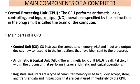The main components of a computer: the Central Processing Unit (CPU) performs arithmetic, logical, controlling, and input/output operations — it is the brain of the computer. The Control Unit instructs the computer's memory, ALU, and I/O devices. The ALU — Arithmetic and Logic Unit — performs integer arithmetic and logical operations. Registers are a kind of very fast memory used to quickly accept, store, and transfer data.